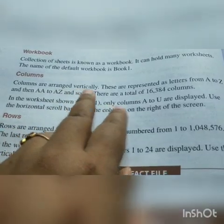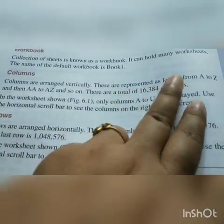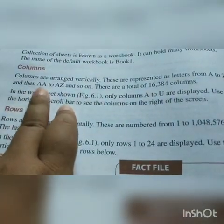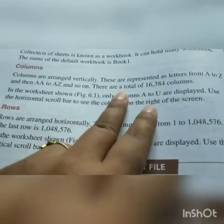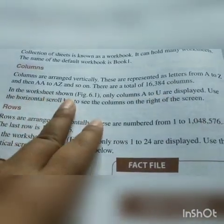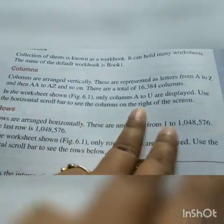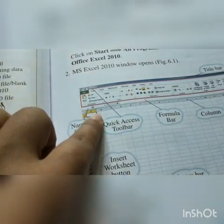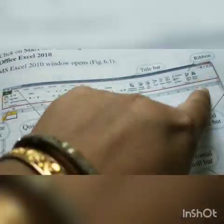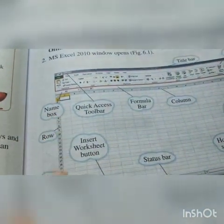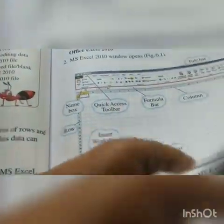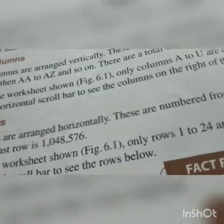Columns are arranged vertically. These are represented as letters from A to Z, and then AA to AZ, and so on. There are a total of 16,384 columns. In the worksheet shown, only columns A to U are displayed. Use the horizontal scroll bar to see the columns on the right of the screen. These are the columns A to U displayed here; more columns exist and can be found by scrolling.